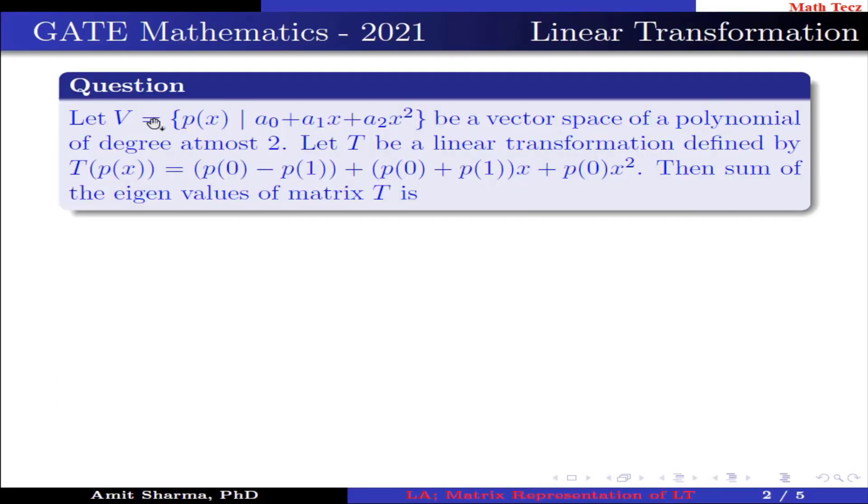Question is: Let V = {p(x) | a₀ + a₁x + a₂x²} be a vector space of polynomials of degree at most 2. Let T be a linear transformation defined by T(p(x)) = (p(0) - p(1)) + (p(0) + p(1))x + p(0)x². Then sum of the eigenvalues of matrix T is?